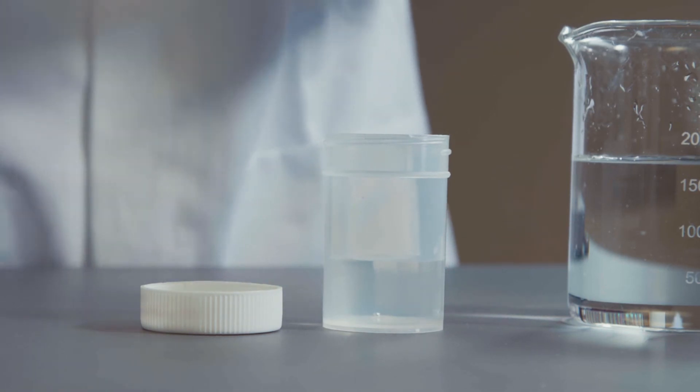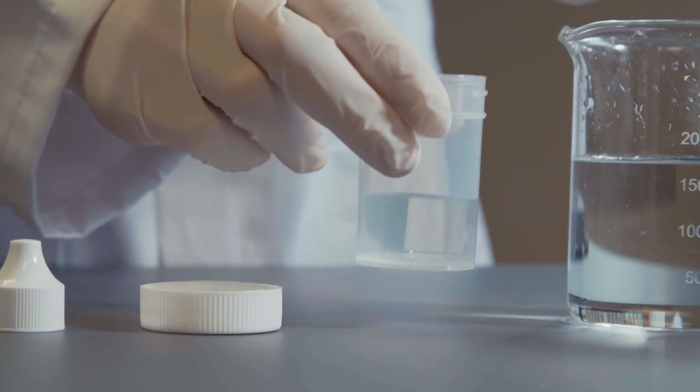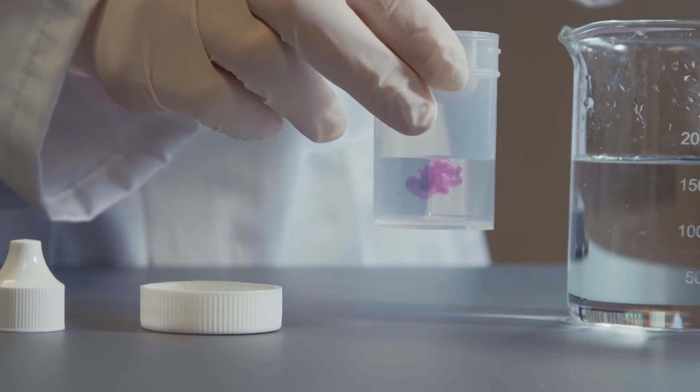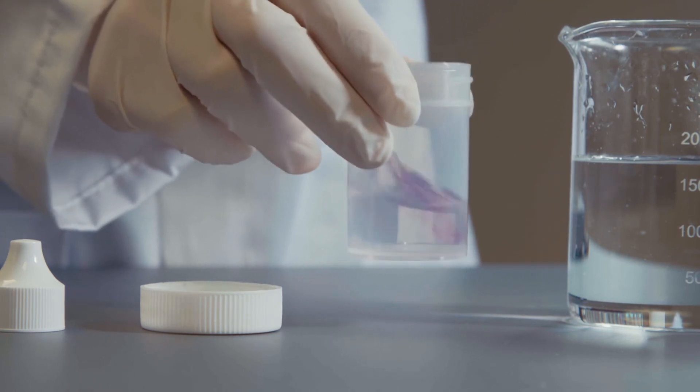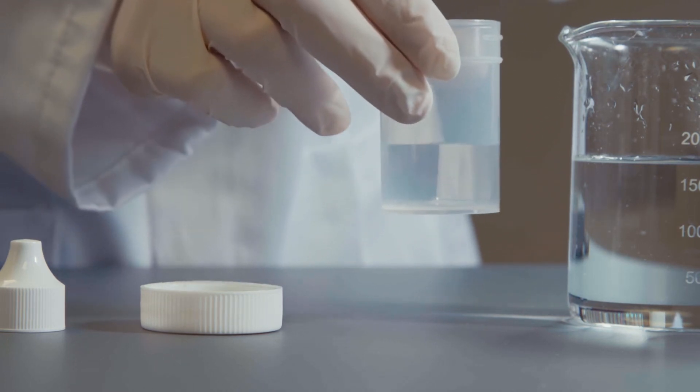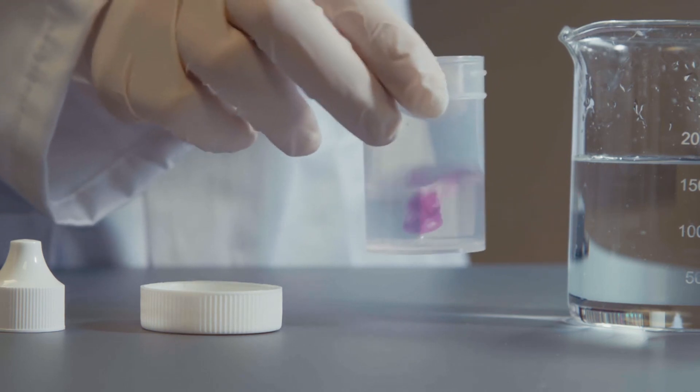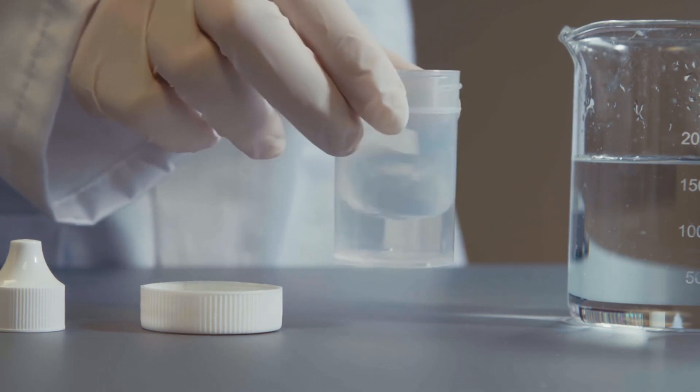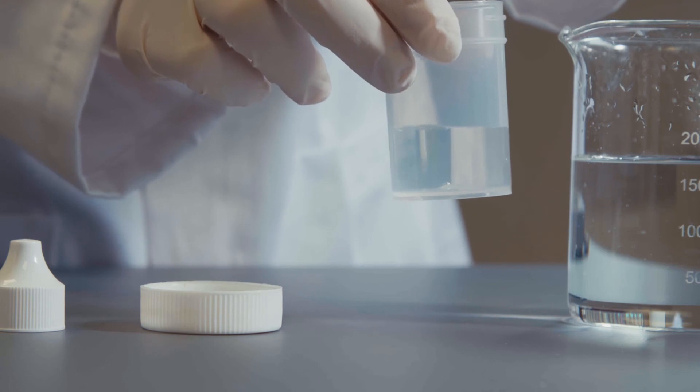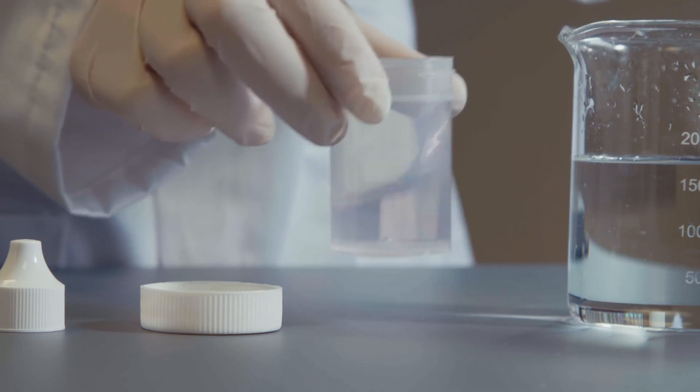Take SS2 titrant and add it one drop at a time, ensuring the sample is mixed after the addition of each drop. Continue to add SS2 titrant one drop at a time until the sample turns a permanent purple color, counting the number of drops added to achieve this.